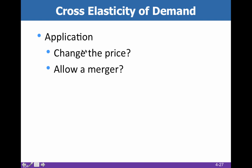Applications of cross price elasticity: should Pepsi change its price? The closer the substitute, the less likely they are to raise price, because Pepsi knows raising prices will send business to Coke. The government also uses this when deciding whether to allow a merger — since Coke and Pepsi are such close substitutes, the US government would likely not allow them to merge, as that would vastly increase the market power of the new corporation.